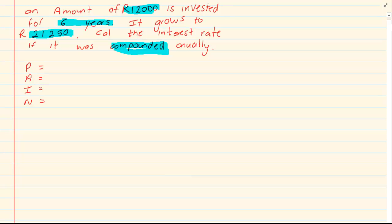Look at what we have. We have our P, which is 12,000. We know that our A is 21,250. We don't have our I, but we have that N is 6. So, number one, we filled in our PAIN.